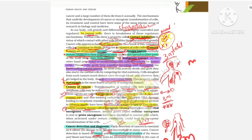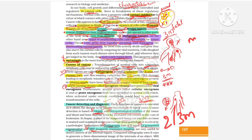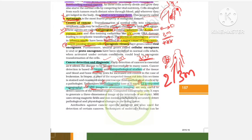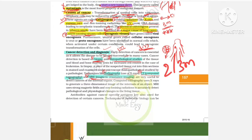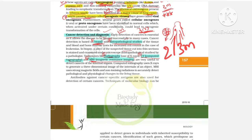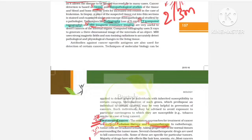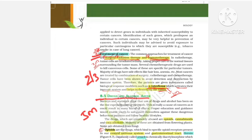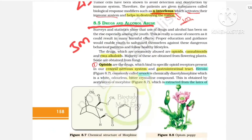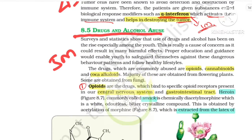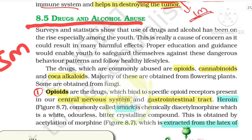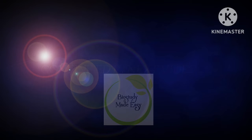So to summarize cancer: cancer cell characters, benign vs malignant tumor differences, metastasis, causes of cancer, types of carcinogens, cancer detection methods, and cancer treatment. Next, the last topic of this chapter — drugs and alcohol abuse.